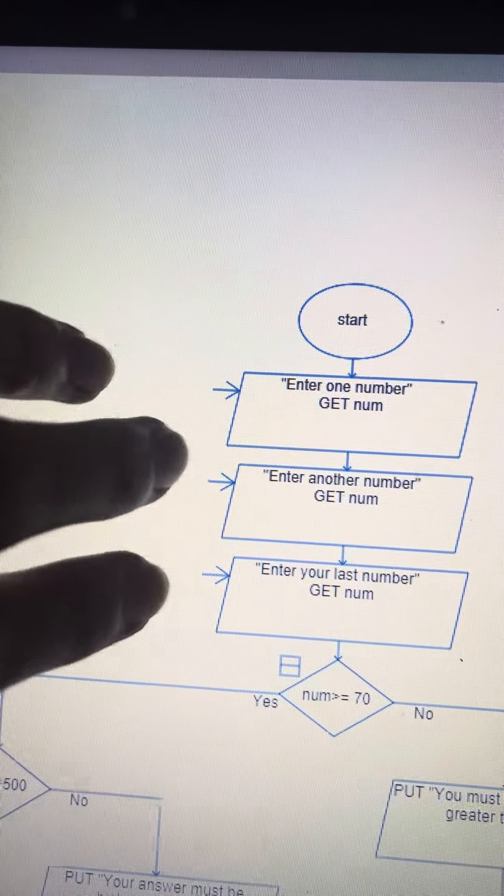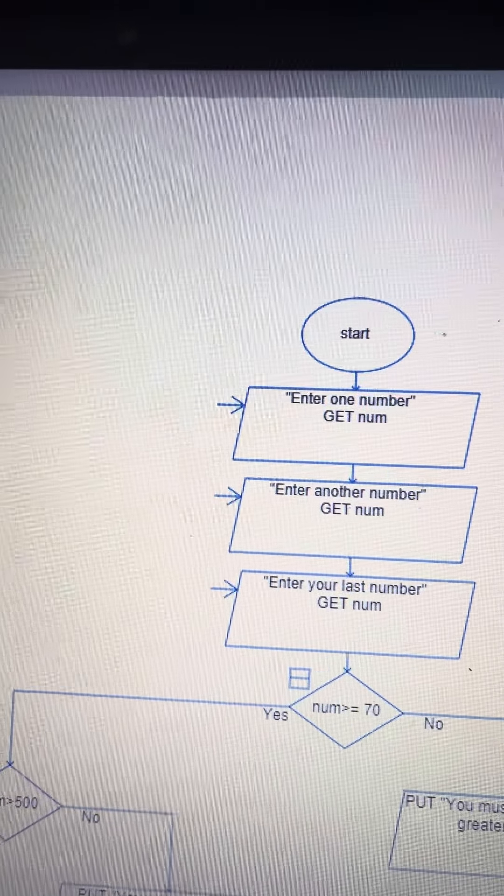The reason I have these three boxes is so that the number is different every time you enter one and it's not repeating.